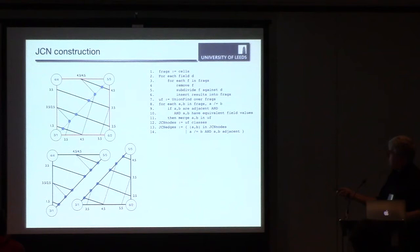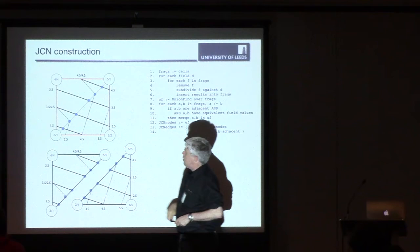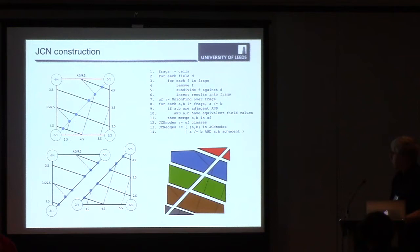So just to summarize how we go about constructing the JCN, what we're starting off with is this set of simplicial cells which define the domain of the simulation, where at each node within the simulation, we've got a combination of field values. We look at cells individually to begin with. So here I've taken this small bit of the data set. I've broken it down into two triangular cells. What we've got here are the subdivision of the cells against the two separate fields. The solid lines represent the division against the second field. The dotted lines are the division against the first field.